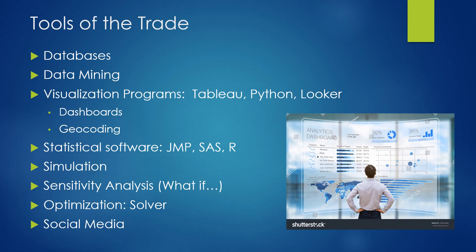We have statistical software such as JMP, SAS, and R. We can do simulations such as game theory, sensitivity analysis — what if I add one more unit of this, how will it affect cost — and then optimization. We'll be learning about Solver in Excel to figure out what combination of goods or services would maximize profits or minimize cost.